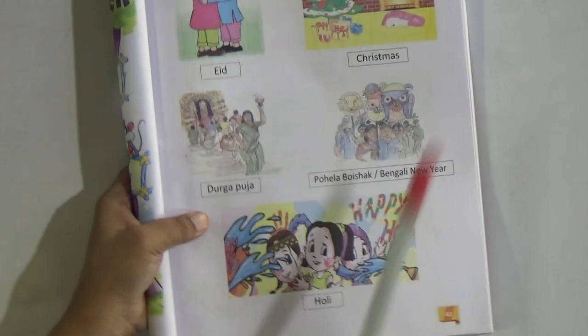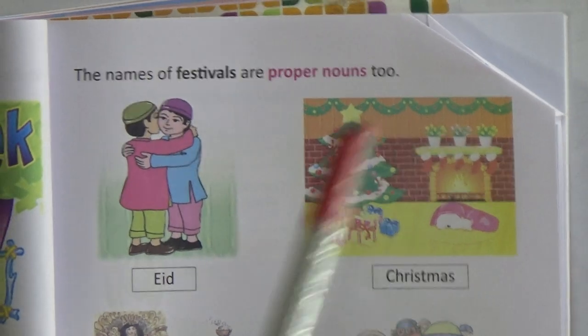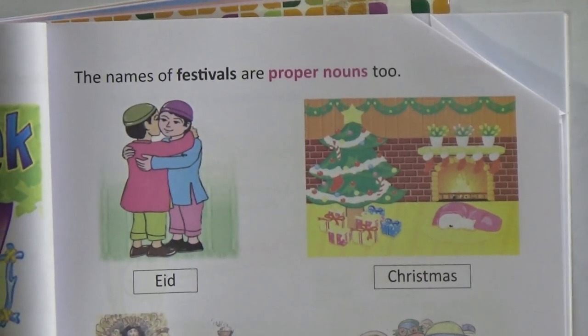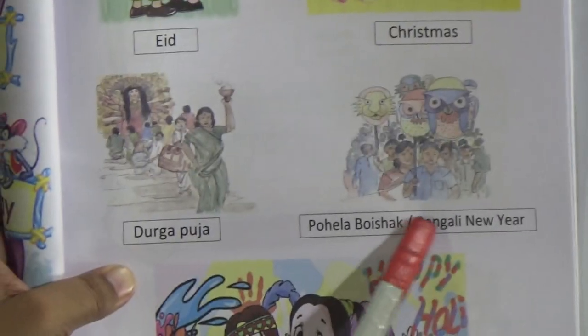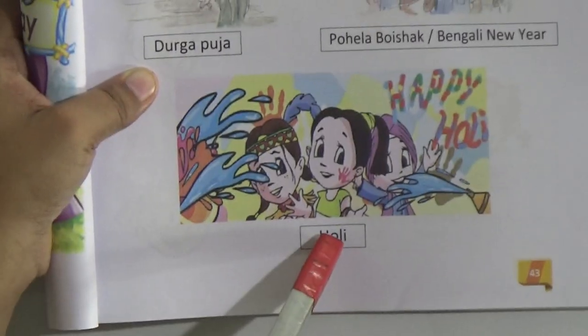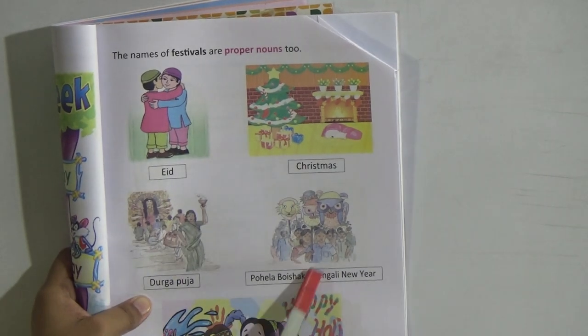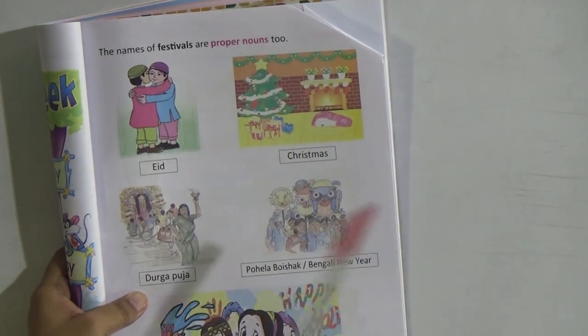Page number 43 — the names of festivals. For example: Christmas, Durga Puja, Pahela Baishakh or Bengali New Year, Poli. These are actually different types of festivals, and these festival names are also naming words. From this chapter we will learn only this.